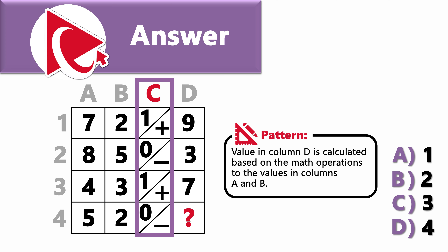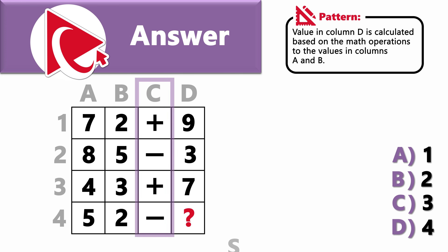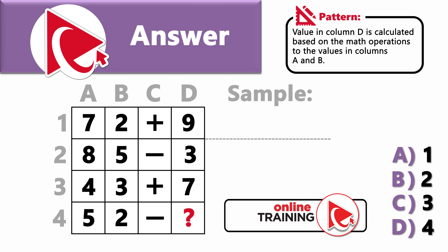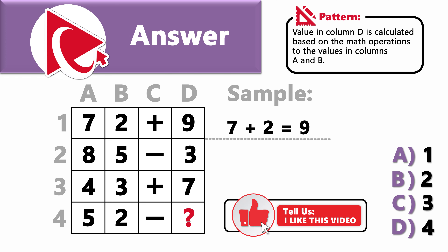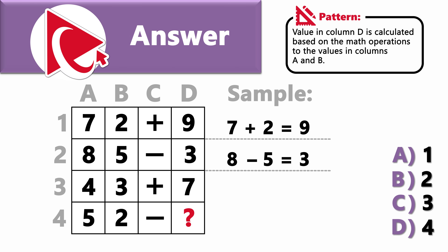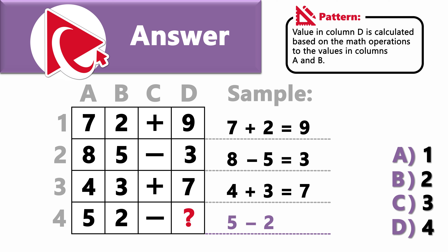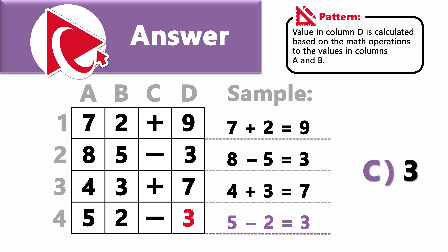Let's substitute the numbers in column C with math operations: row 1 is plus (addition), row 2 is minus (subtraction), row 3 is plus, and row 4 is minus. Row 1: 7 + 2 = 9. Row 2: 8 − 5 = 3. Row 3: 4 + 3 = 7. For the missing value: 5 − 2 = 3. So the correct answer here is choice C: 3.